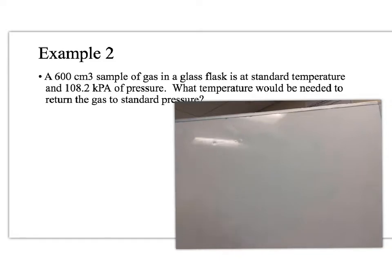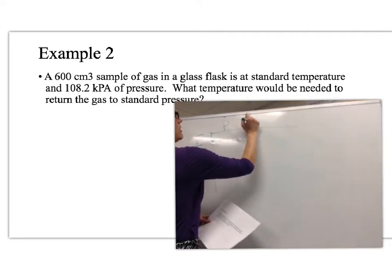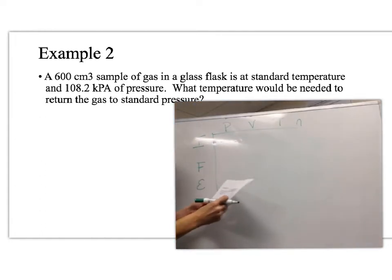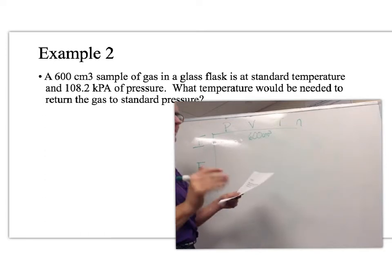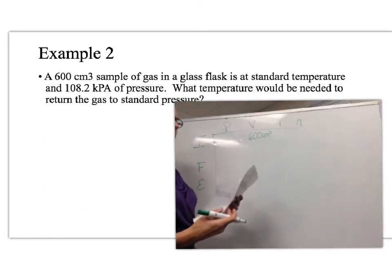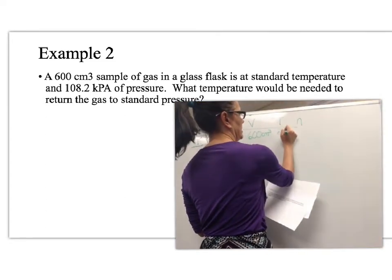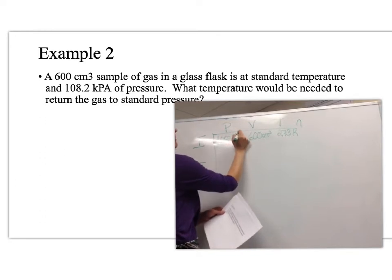Let's look at the second example. A 600 cm³ sample of gas in a glass flask is at standard temperature and 108.2 kPa of pressure. What temperature would be needed to return the gas to standard pressure? Setting up the IFE chart: 600 cm³ is my initial volume. 'Standard temperature' means I go to Table A — standard temperature is 273 Kelvin, so that's my initial temperature. 108.2 kPa is my initial pressure.